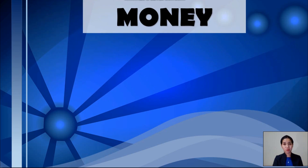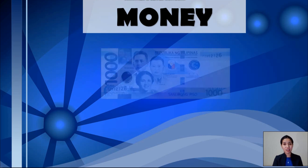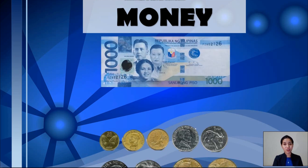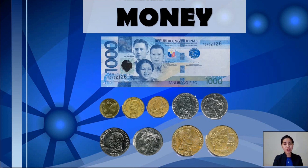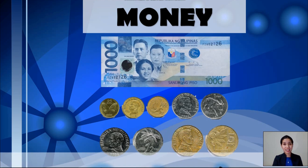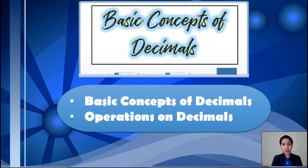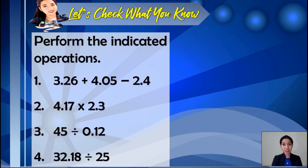First, let's talk about money. Money is used to do transactions. When we want to buy something, we use our money. And in the Philippine monetary system, we actually have the peso and centavos. Let's say we have 1,050 centavos. When we use our money, we are actually working with decimals. Here, we are going to focus on the important concepts of decimals and how to perform operations on decimals. But first, let us check what you know about decimals.